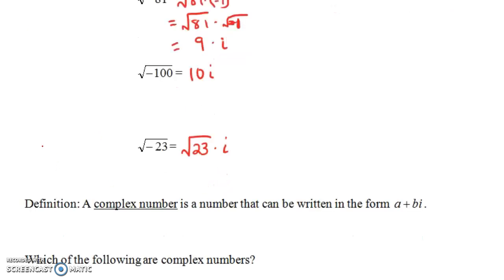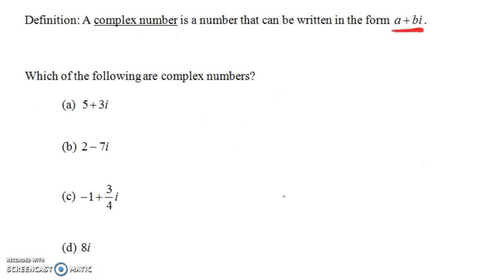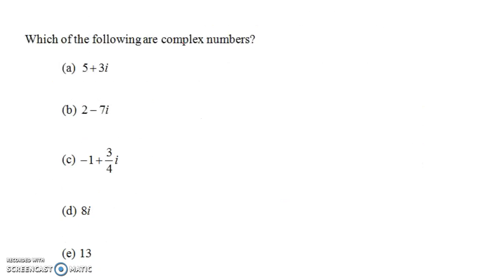Now, what is a complex number? A complex number is just a number that can be written in the form a plus bi. So, let's look at some examples. 5 plus 3i — is that a complex number? Yes, it's of the form a plus bi. By the way, the a is called the real part and the b is called the imaginary part. So, the real part of this number is 5, and the imaginary part is 3.